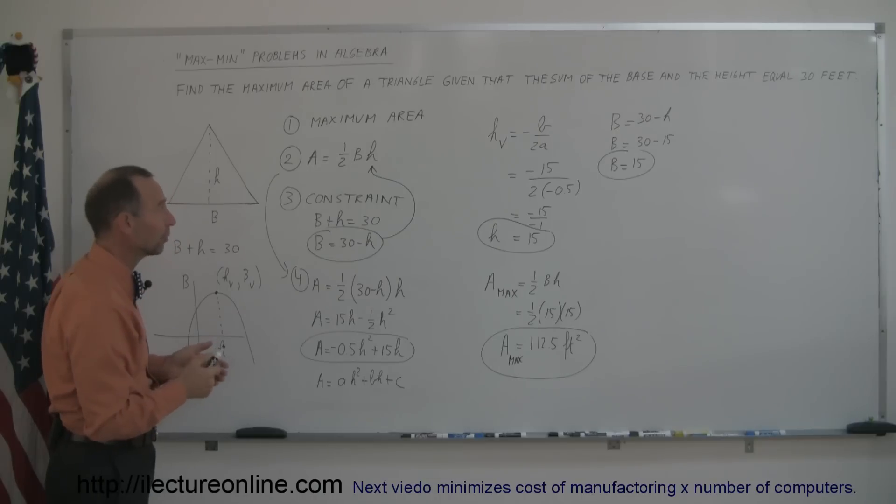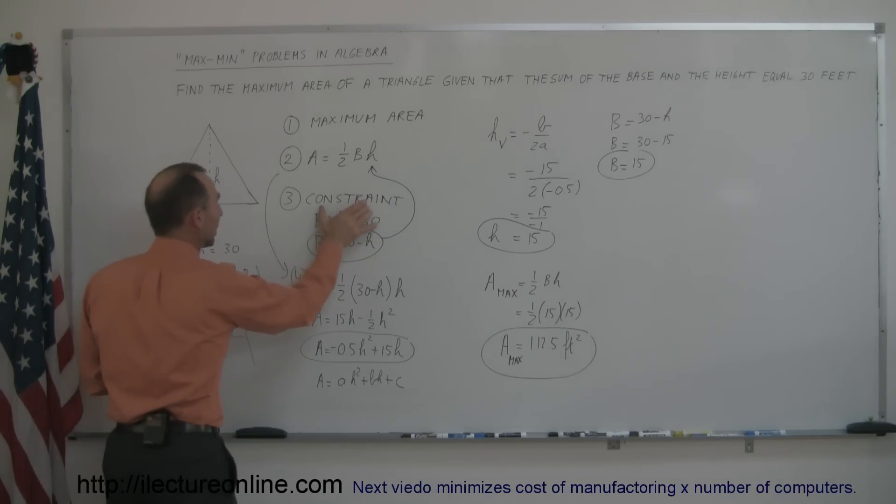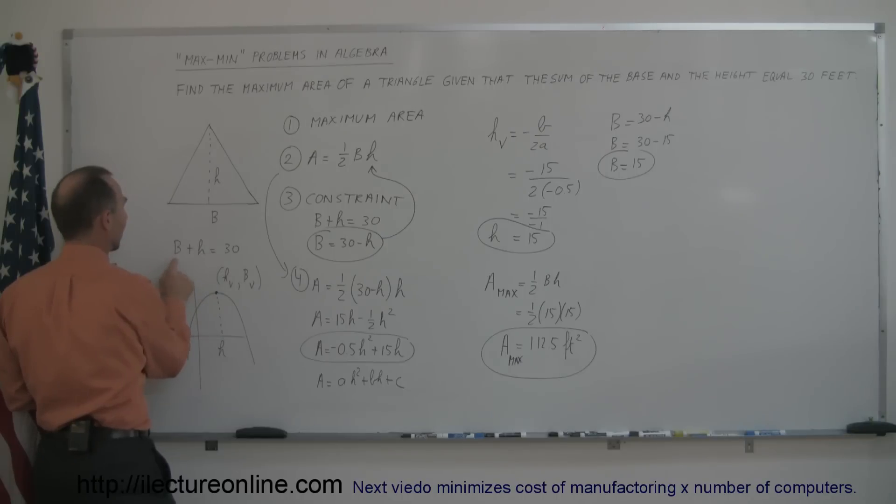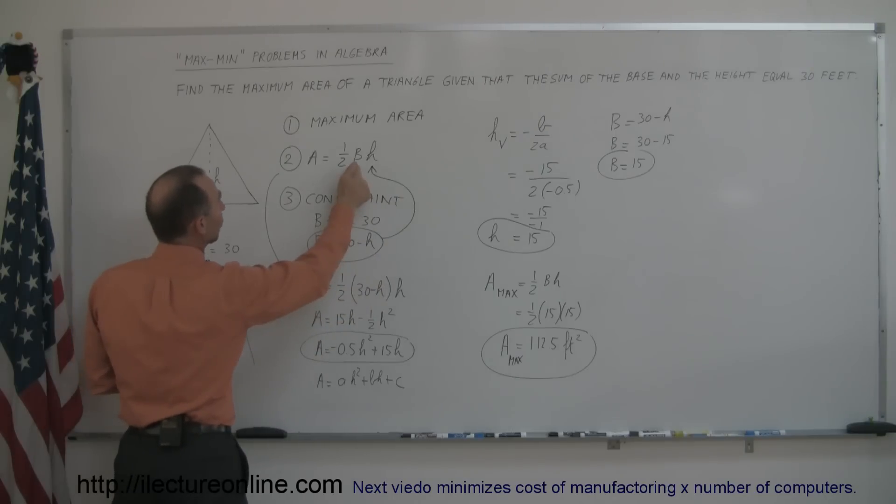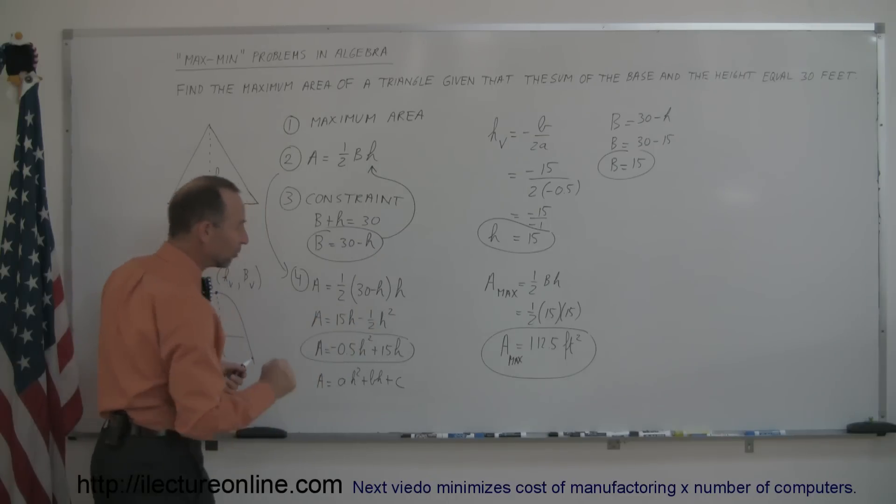You then go look for a constraint, because since the area is calculated in terms of two variables, and you can't figure it out when you have two variables, you need to eliminate one of the two variables, and you do that by finding the constraint. The constraint in this case is that the base plus the height must equal 30 feet. You solve that constraint for one of the two variables, I chose b, and plug that back in the original equation, so that when I do that I end up with an equation that's only in terms of h, one variable.